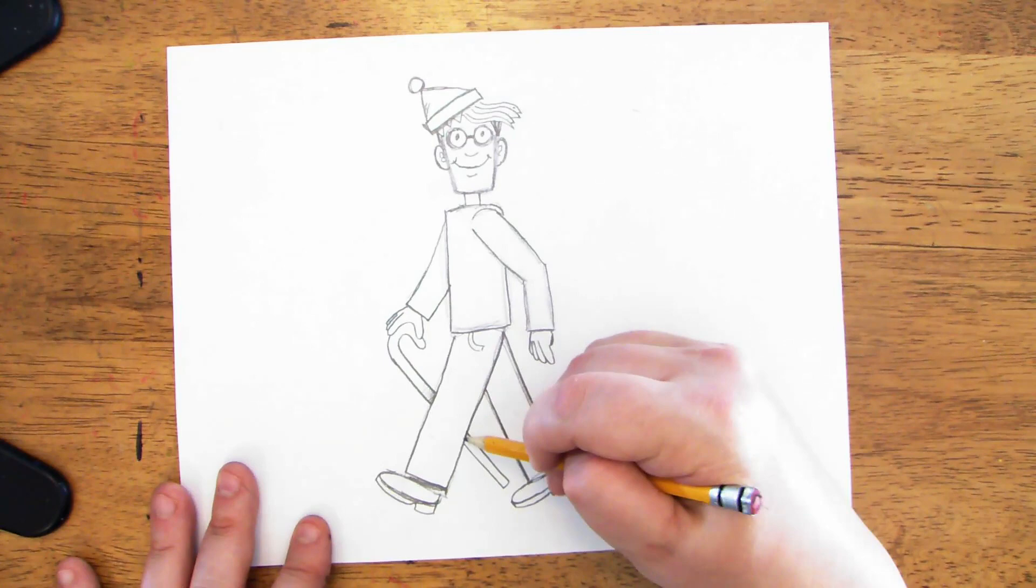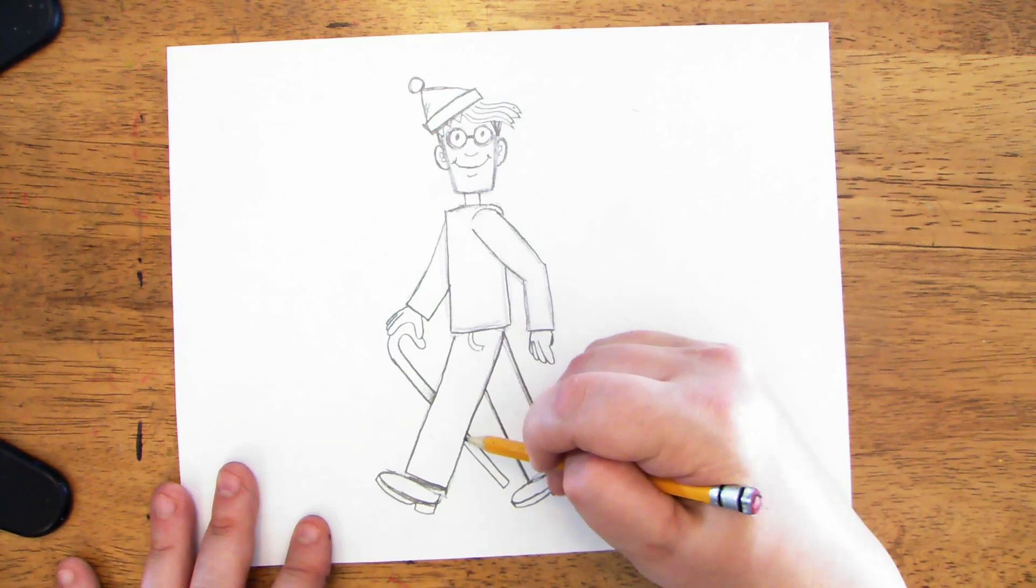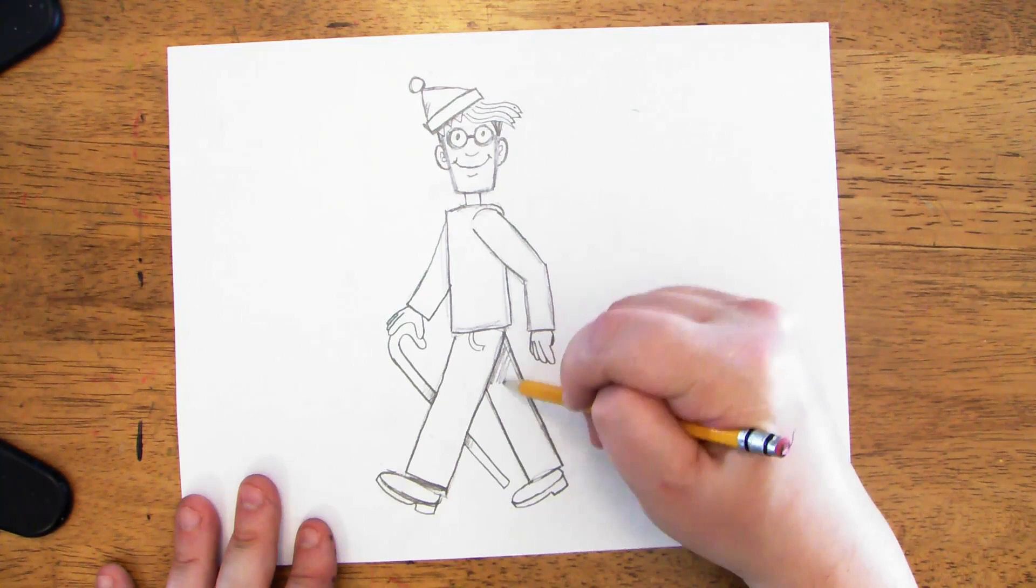One other trick you can do when overlapping is you can add a little bit of shadow on the object that's in the back. I can do that with his cane here. I could also do that with his leg and his arm just a little bit.